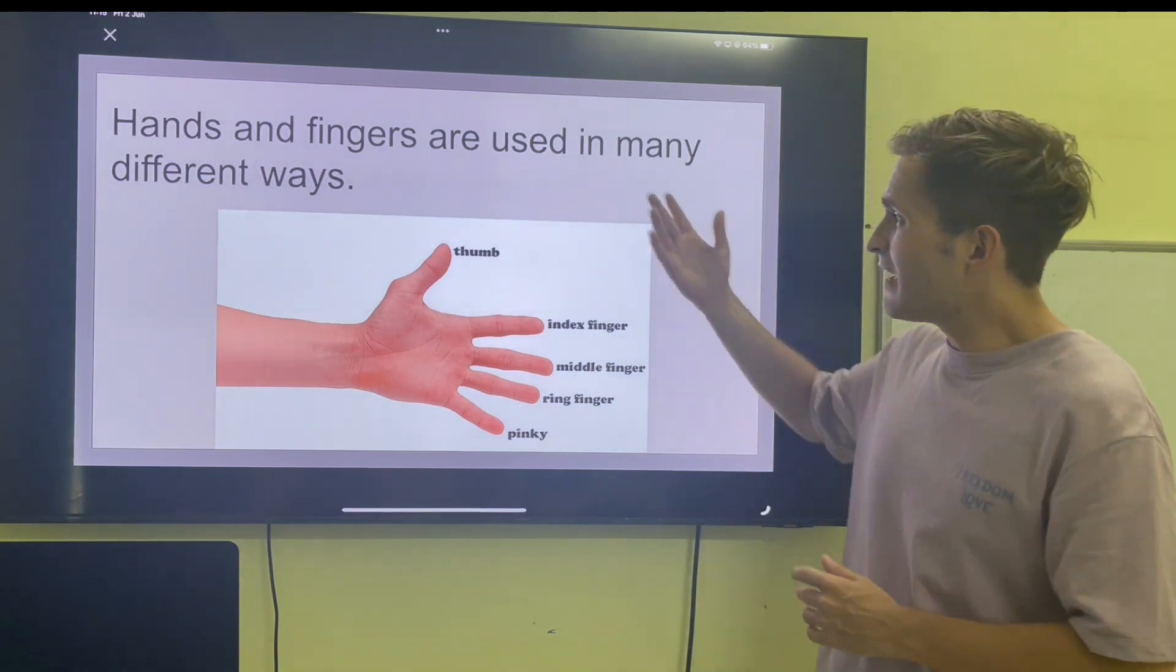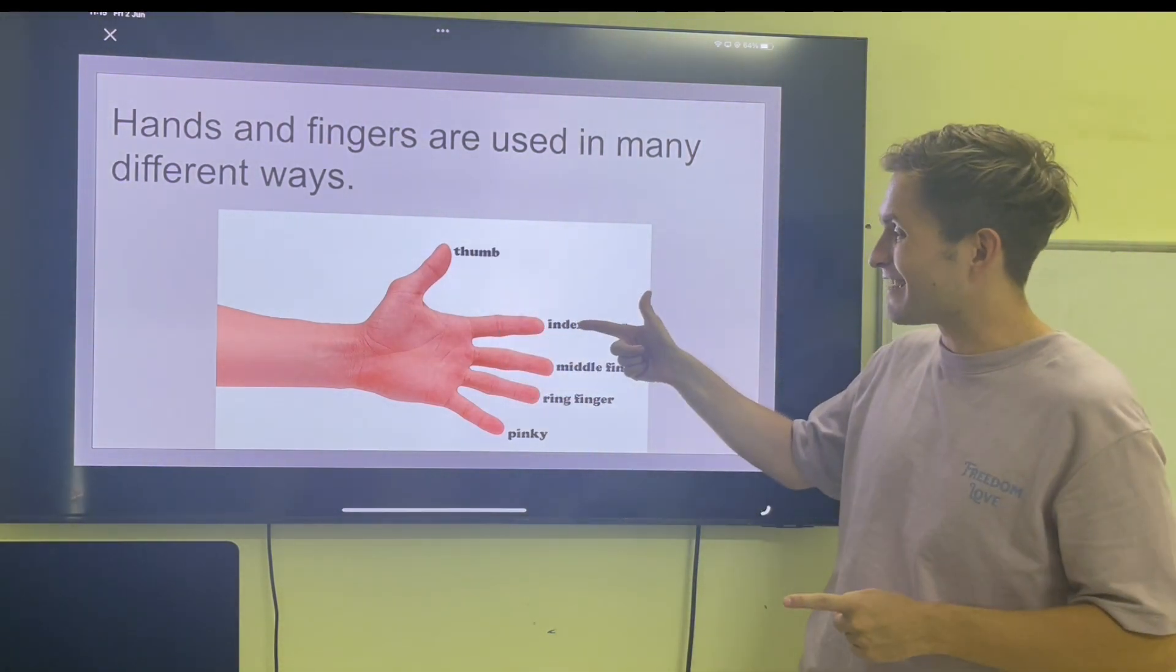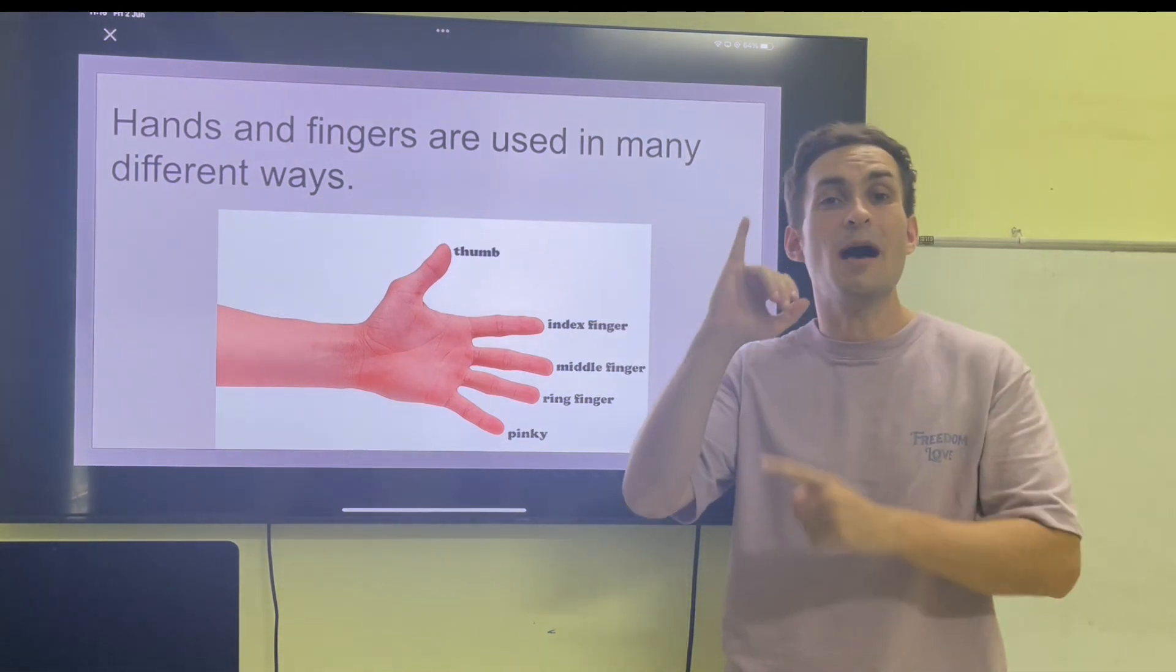Hands and fingers are used in many different ways. Here is a hand. We have a thumb, an index finger, a middle finger, a ring finger, and a pinky.